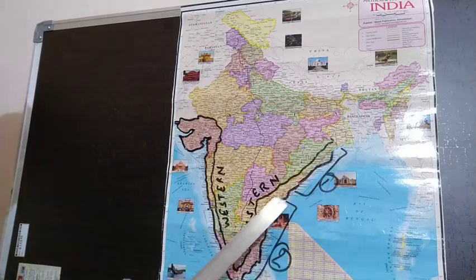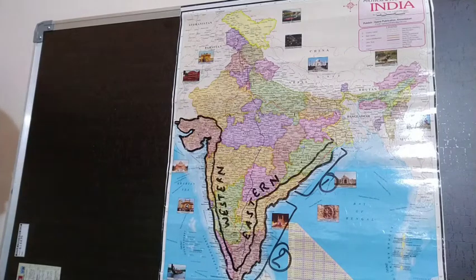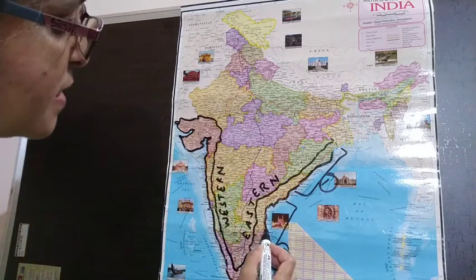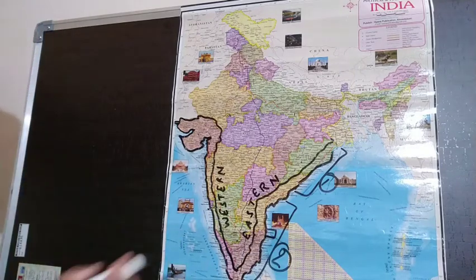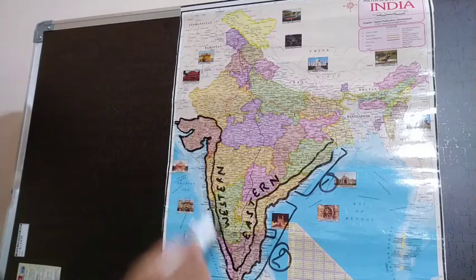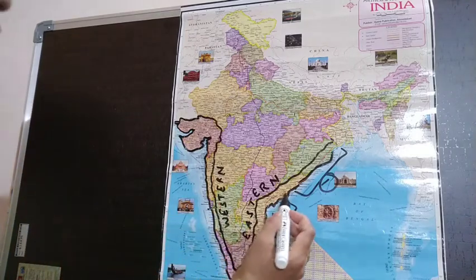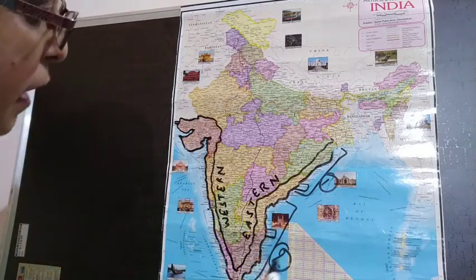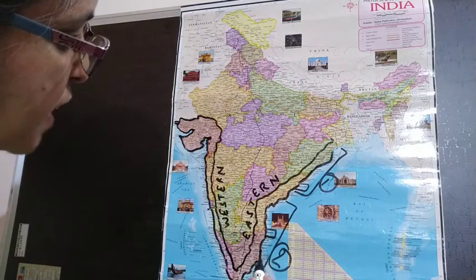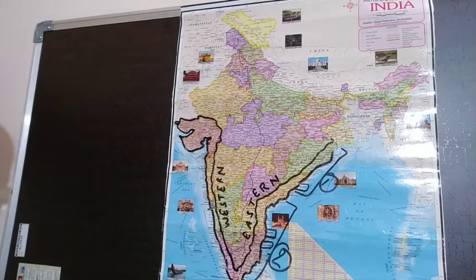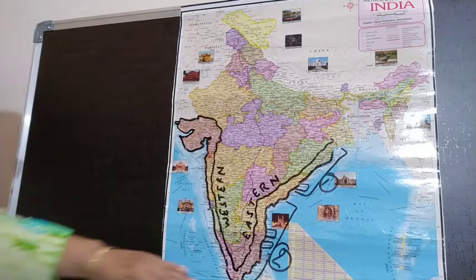On the eastern coast we have three main important seaports or harbors. Chennai is India's third largest harbor, located on the Coromandel Coast. The other important seaports are Vishakhapatnam and Pondicherry. These are the main seaports along the Coromandel Coast.